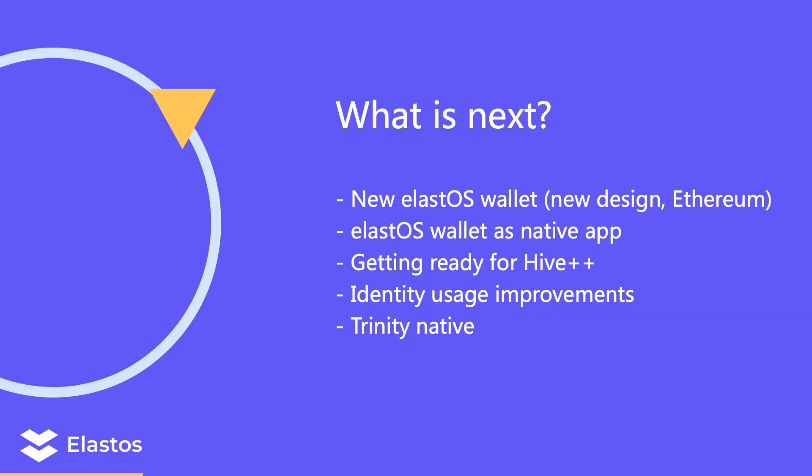So what's next? We are currently working on the new ElastOS wallet with a new design and with Ethereum support. The development is almost complete and we plan to deliver something during September. After that, apps will be able to run smart contracts, which is a very important feature for ElastOS. At the same time, we hope to publish this new wallet as a native app when Trinity Native is ready.